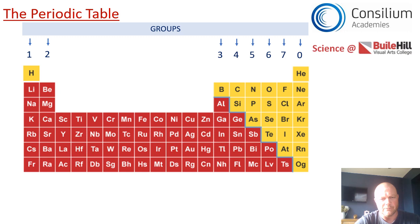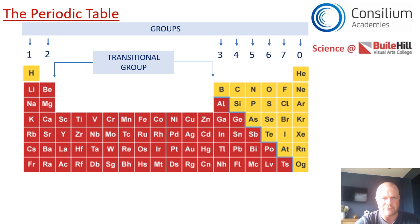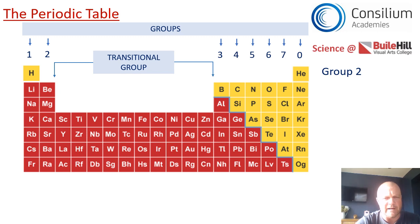In the middle, that big section with no number is actually called the transitional group. If I was to ask you to name an element in group two, you would have to find group two and give me the name of an element. The answer I chose was Mg because it's in group two, but it could be any of the others.